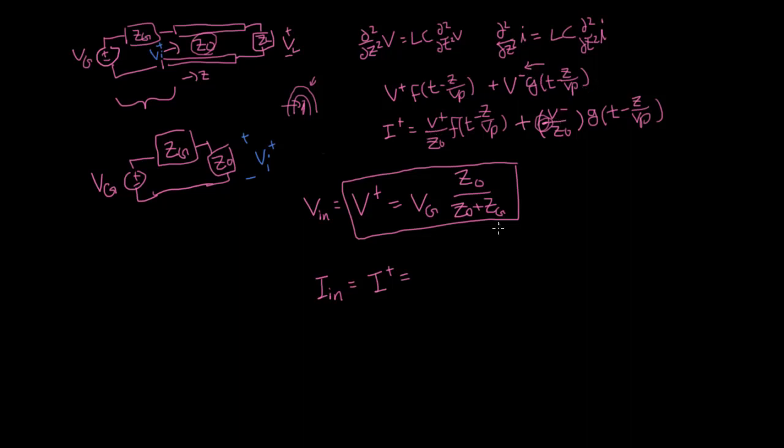In this case, we're only looking at this first wave going in, and so the initial input current is going to be V plus over Z naught. And so the initial voltage going in is this V plus that you found here. You just divide it by Z naught with no sign change. And so that is the voltage that's going to go in.